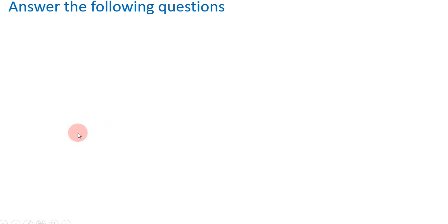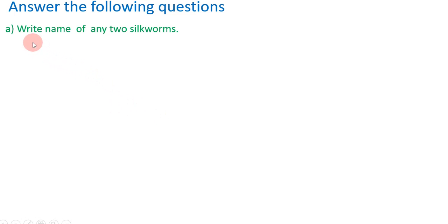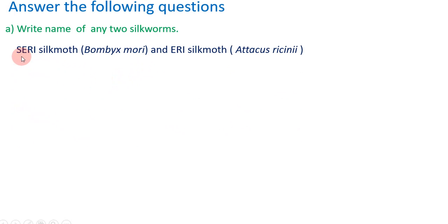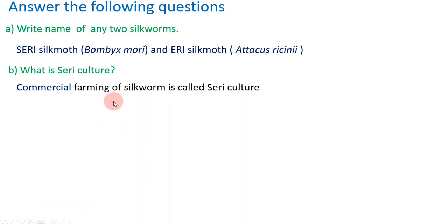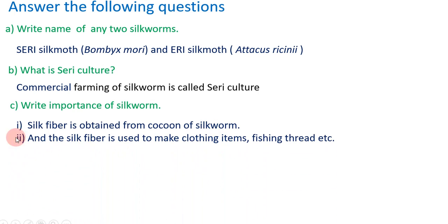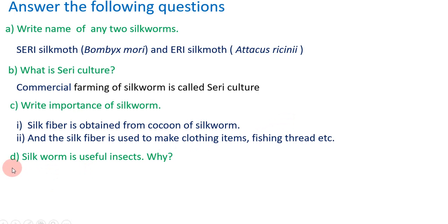We now have some questions regarding this presentation. The names of two silkworms are seri silk moth and eri silk moth. Their scientific names are Bombyx mori and Attacus ricini. Sericulture is the commercial farming of silkworm. Silk fiber is obtained from the cocoon of silkworm and is used to make clothing items, fishing threads, etc.